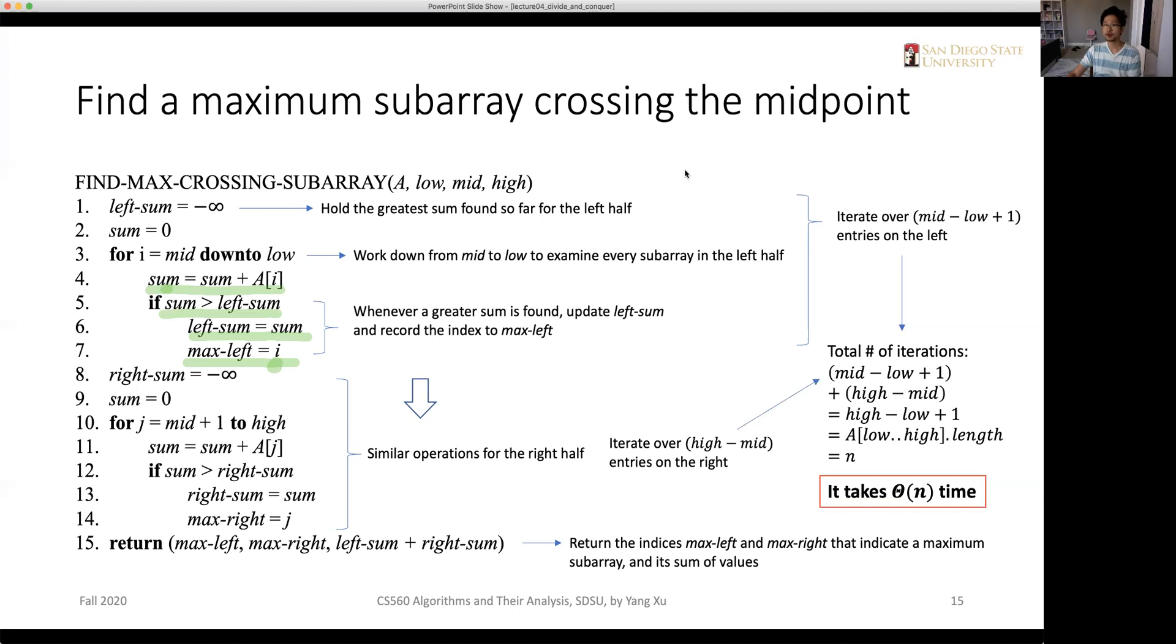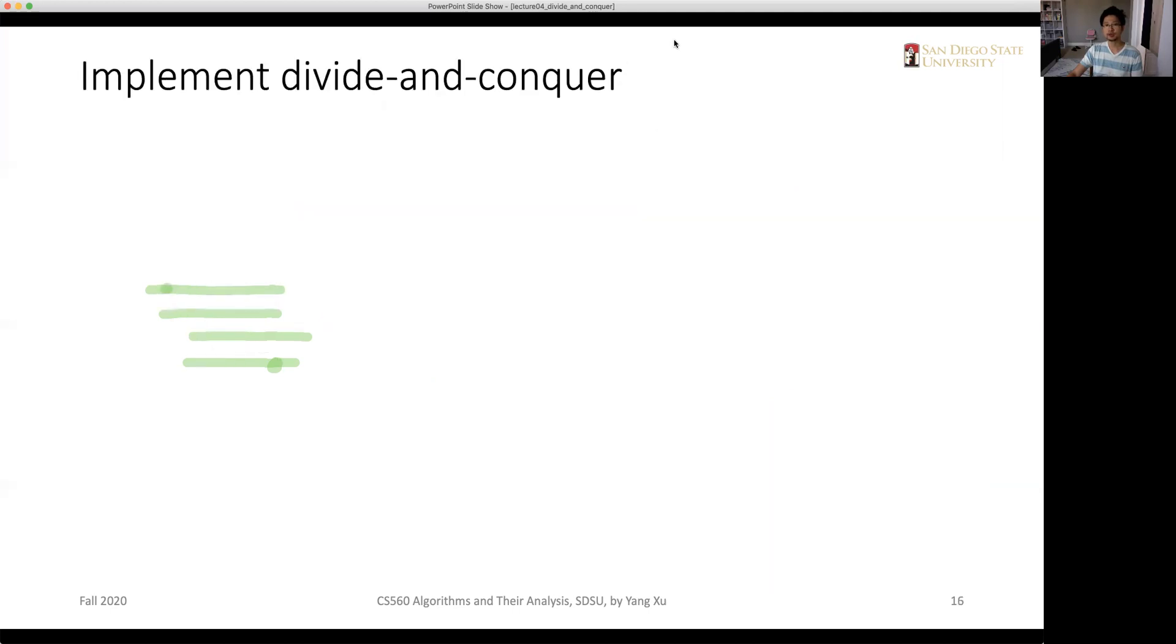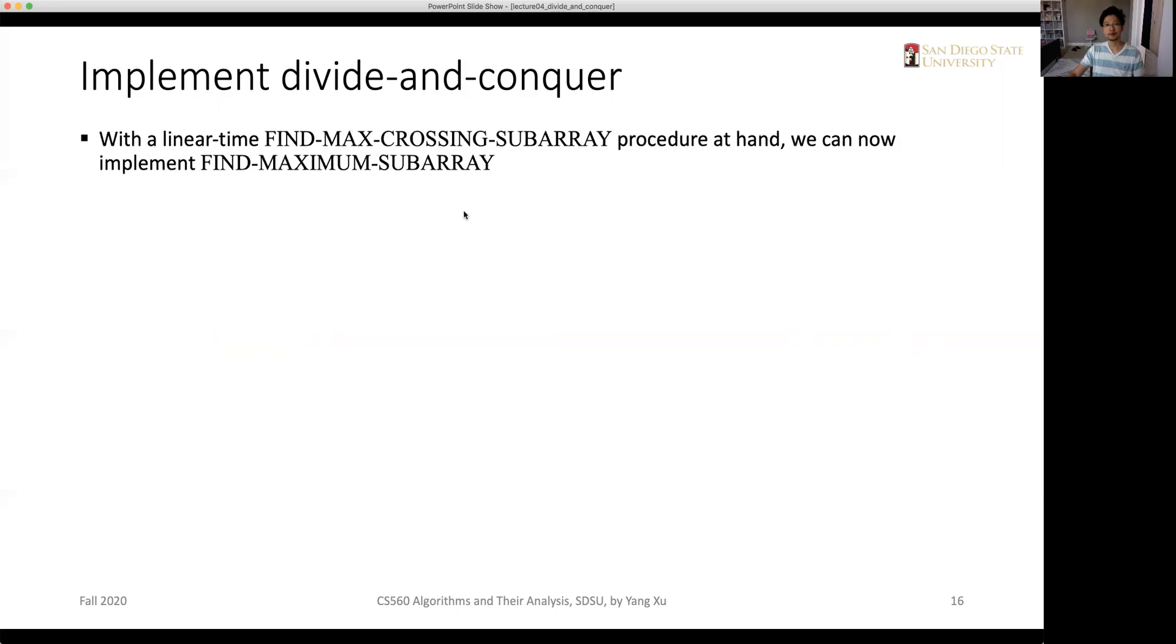We have solved the most special case. And for the other two cases, we can simply use the recursive call to solve them. So altogether, we can implement divide and conquer algorithm for finding the maximum sub-array quite easily. We already have the find max crossing sub-array at hand. So now we can go ahead and implement find maximum sub-array.